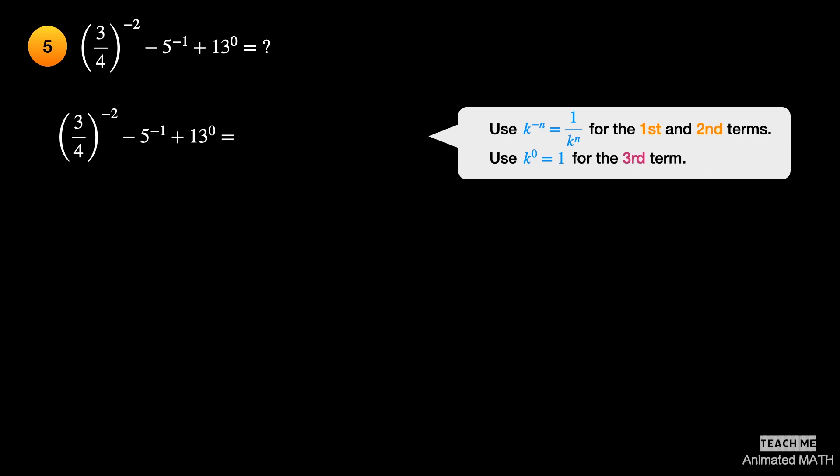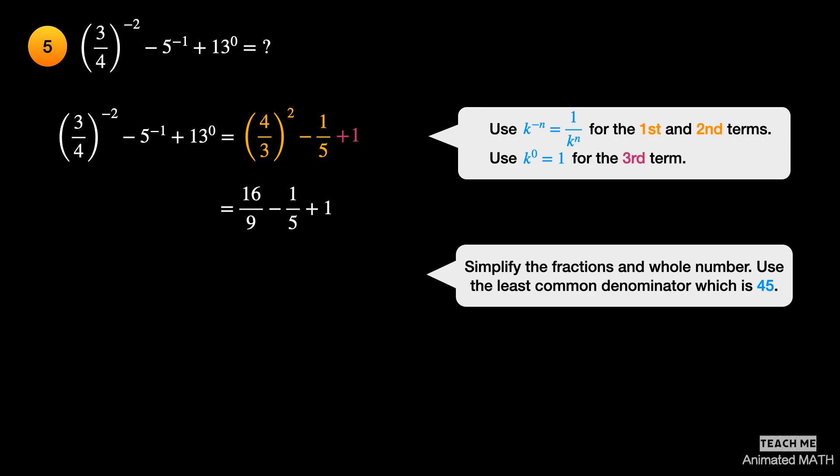Use the 4th property to simplify the 1st and 2nd terms, because they have negative exponents. Use the 1st property for the 3rd term, because its exponent is 0. Simplify the fractions and whole number using the least common denominator, which is 45. The final answer is 116 over 45.